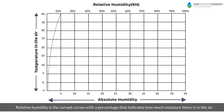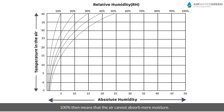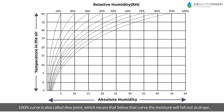Relative humidity is shown as curved lines with a percentage that indicates how much moisture there is in the air. 100% means that the air cannot absorb more moisture. The 100% curve is also called the dew point, which means that along that curve the moisture will fall out as drops.